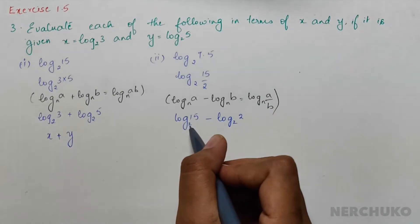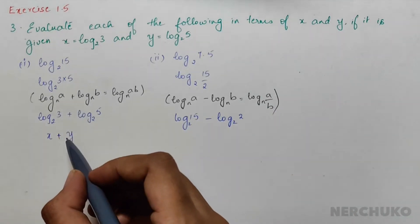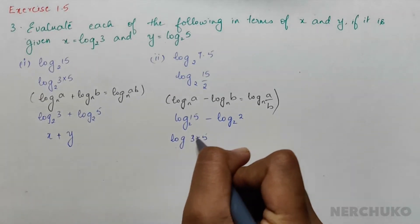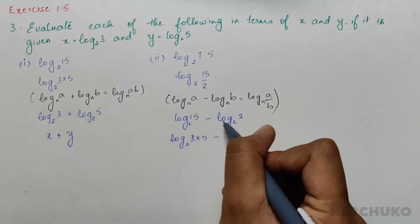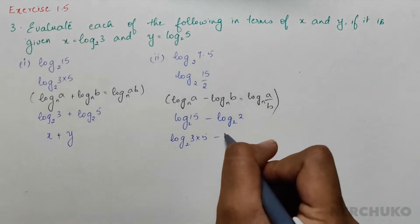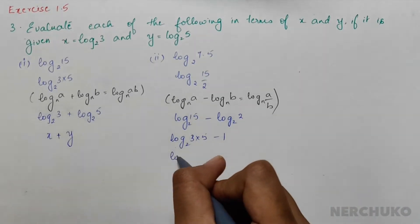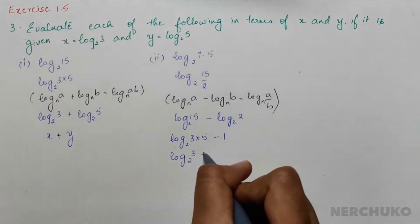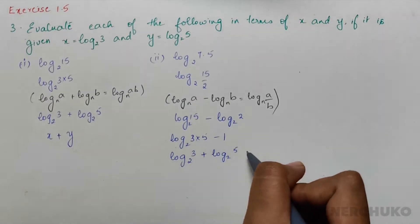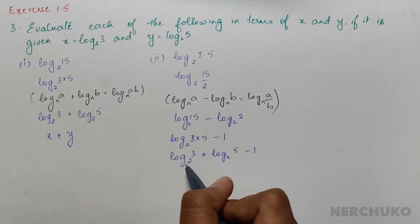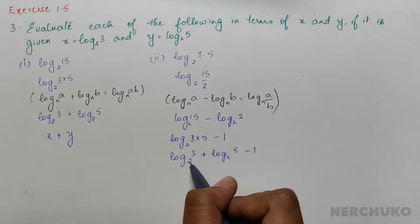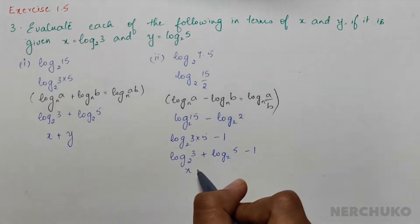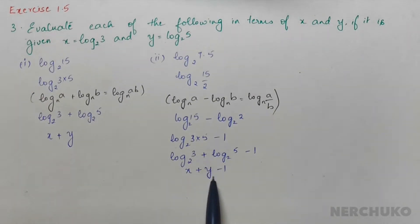Now log 15 to base 2 was done in the previous problem. So log 15 to base 2 equals log(3 × 5) to base 2, minus log 2 to base 2 which equals 1. This gives log 3 to base 2 plus log 5 to base 2 minus 1. Since log 3 to base 2 is x and log 5 to base 2 is y, our answer is x plus y minus 1.